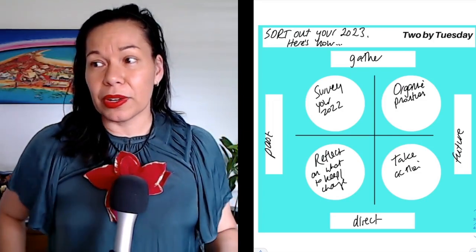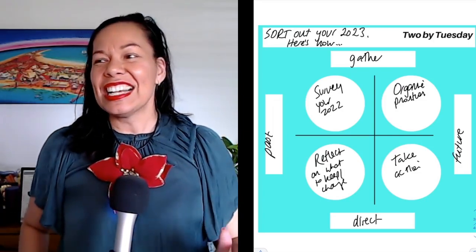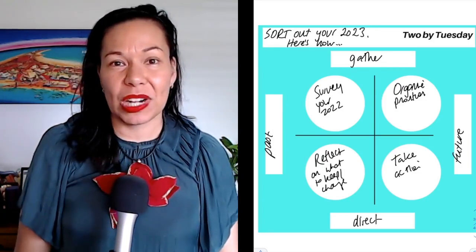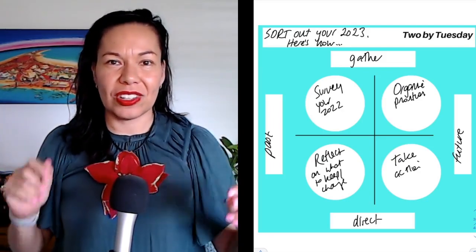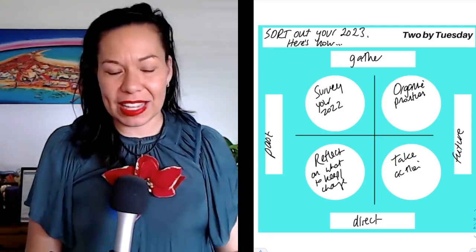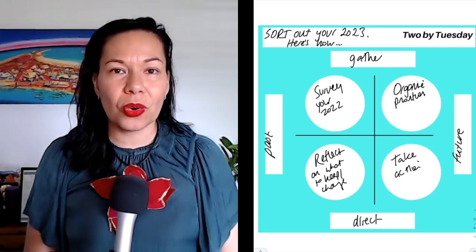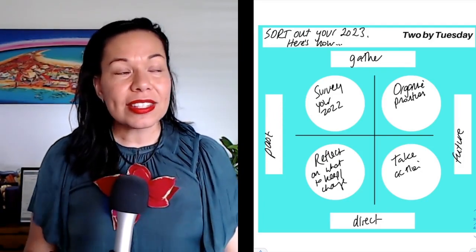So part of my surveying my 2022 is like how much did I commit to my not to-do list and my to-do list as well. But such an awesome activity to kick it off. The top right is to organize your priorities. So this is a really question of okay, who do I want to be? What do I want to be doing? What does that look like for me in 2023?